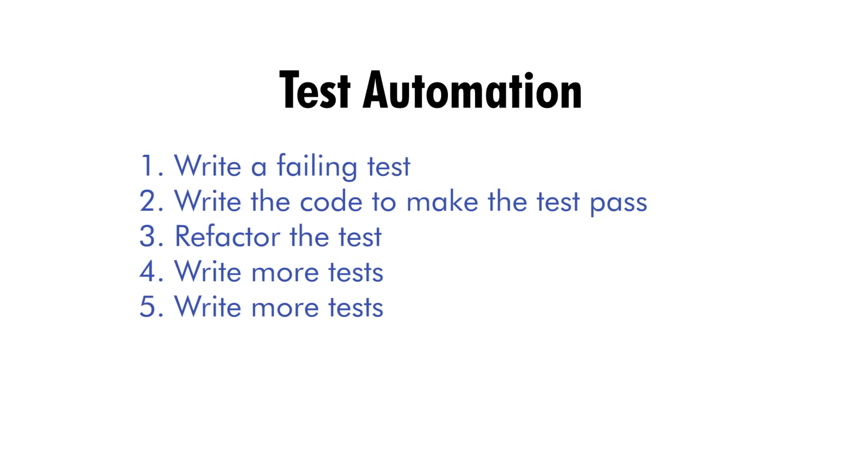The cycle typically involves these steps: First, write a failing test - write an automated test that describes the desired behavior of the system or application. Second, write the code to make the test pass - write the minimum amount of code required to make the test pass. Third, refactor the test - once the test passes, refactor the test code to improve its design and remove duplication and unnecessary complexities. Fourth, write more tests to cover all possible scenarios and edge cases. Fifth, repeat the process - continue writing failing tests, writing code to make tests pass, and refactoring the test code until all requirements are met and all tests pass.